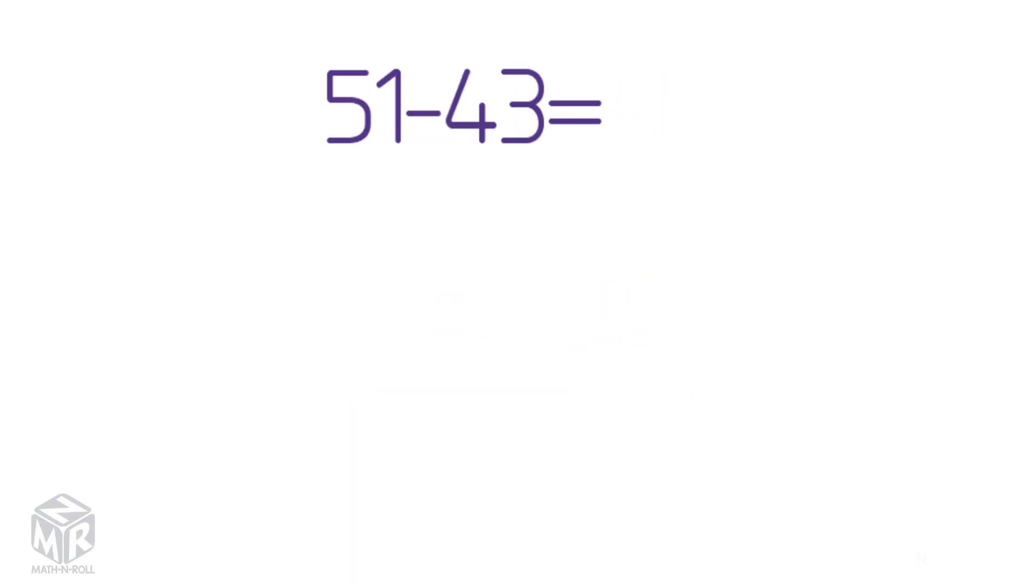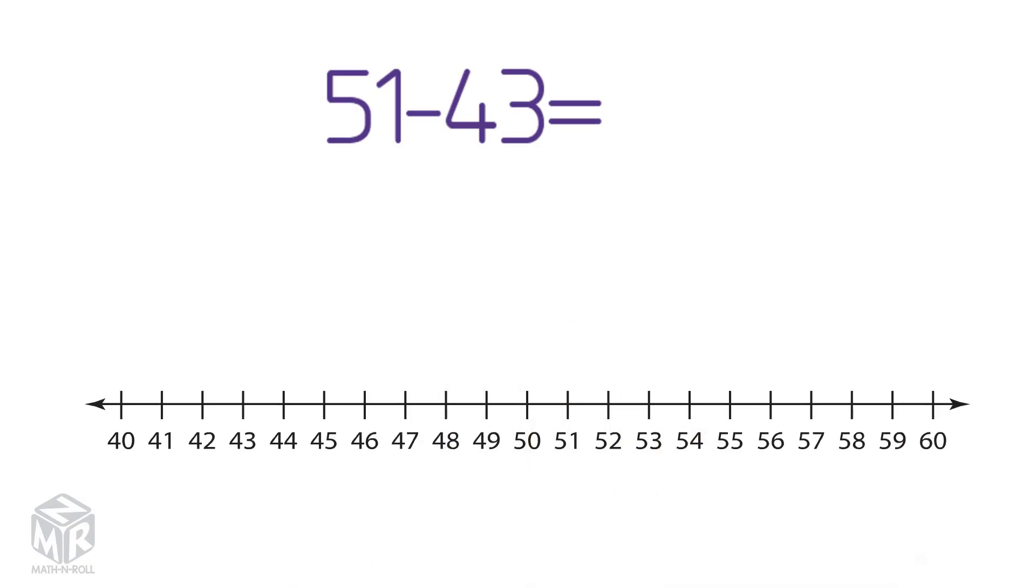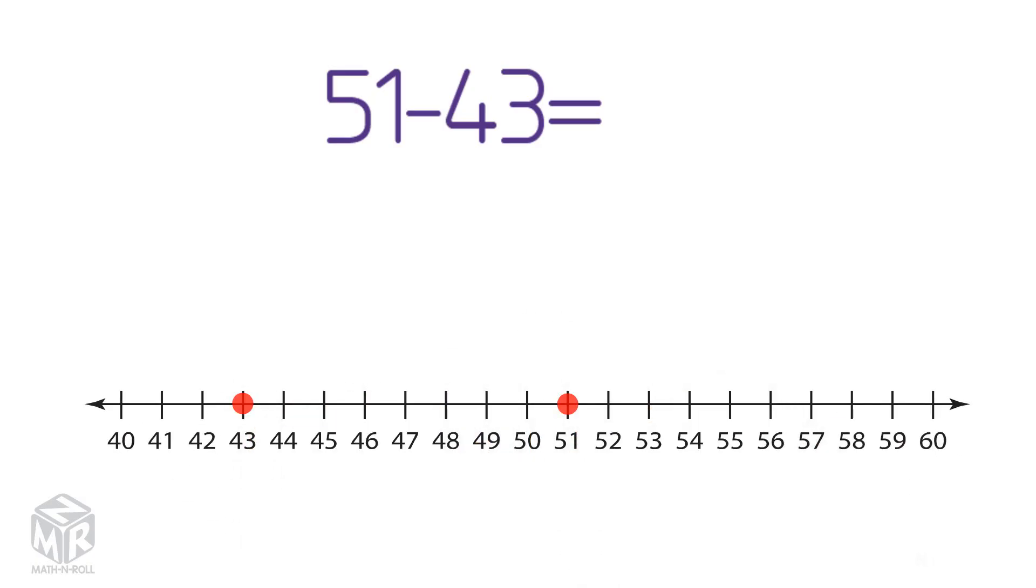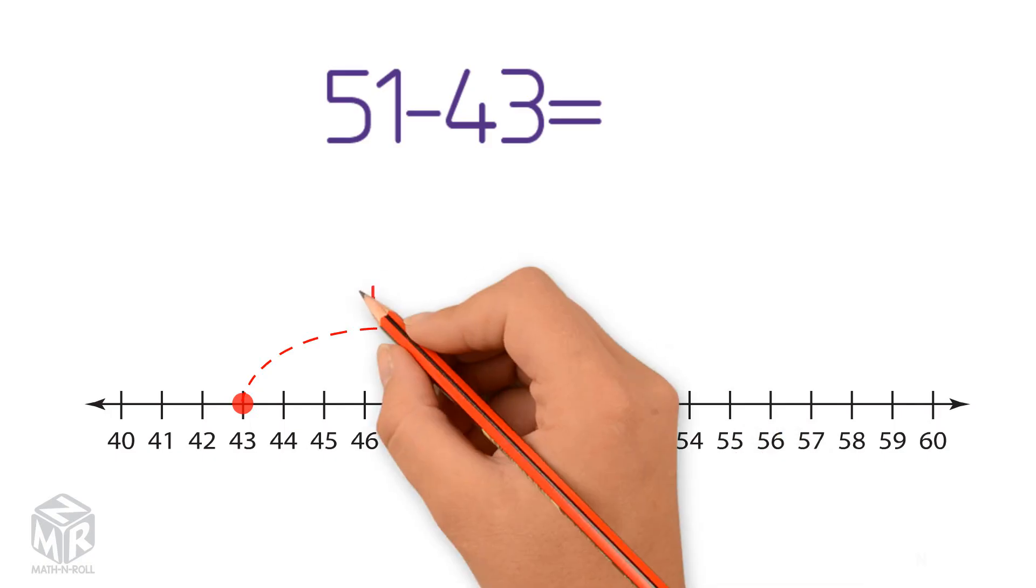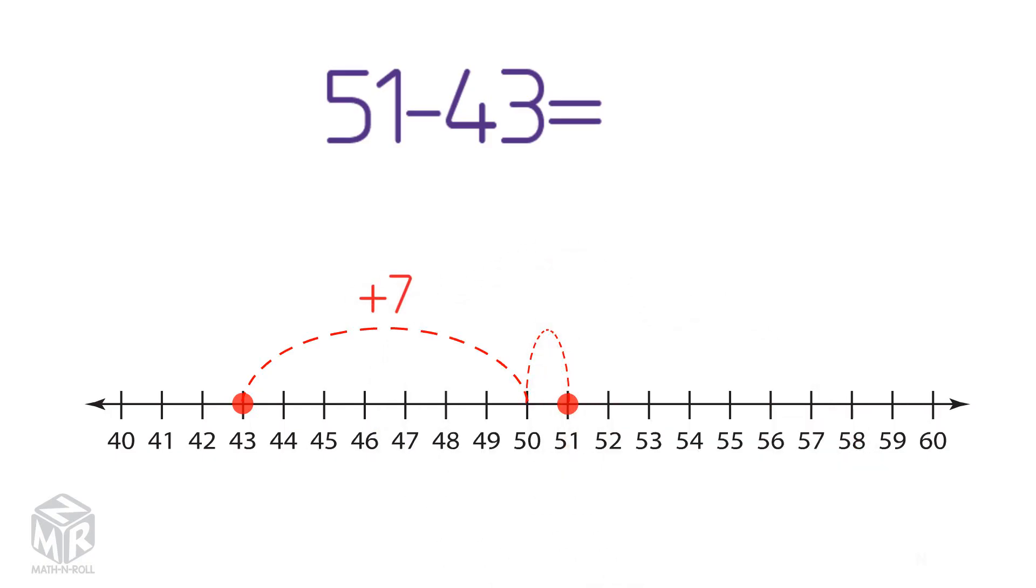Let's try another example. 51 minus 43. Let's draw it out. Start at 43. Count up 7 to 50. Then count up one more to 51. 7 plus 1 equals 8. So 51 minus 43 equals 8.